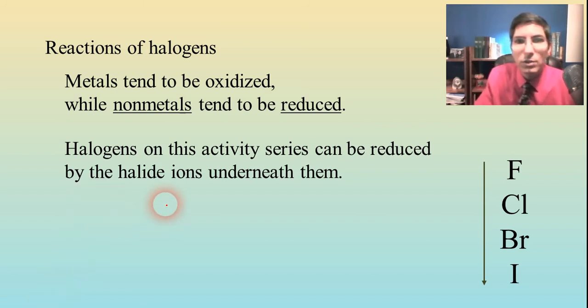The way this works is halogens on this activity series can be reduced by the halide ions underneath them. So for example, if we have fluorine and we add some bromide ions to that, here's fluorine and bromide ions are underneath it. So yeah, that's going to react. So we'll have fluoride ions and bromine. And of course, you got to balance that.